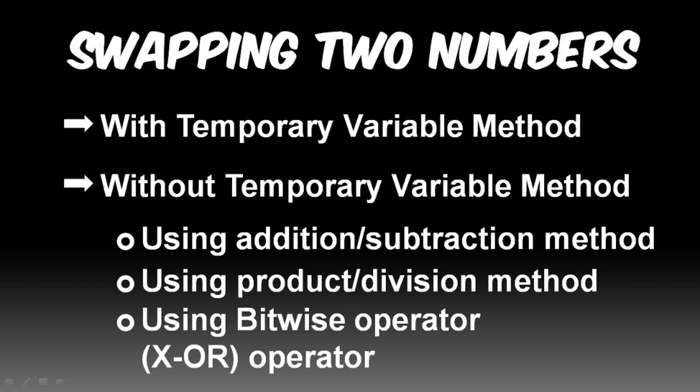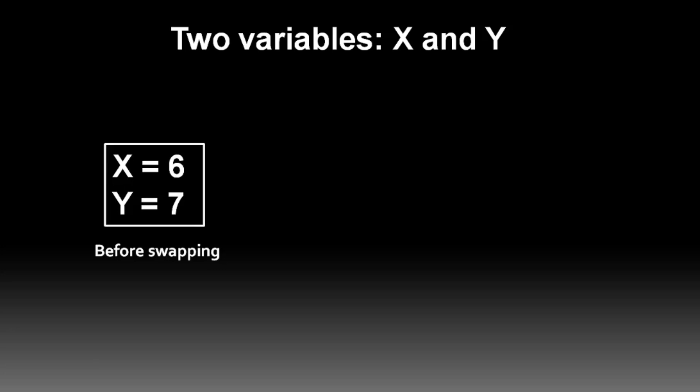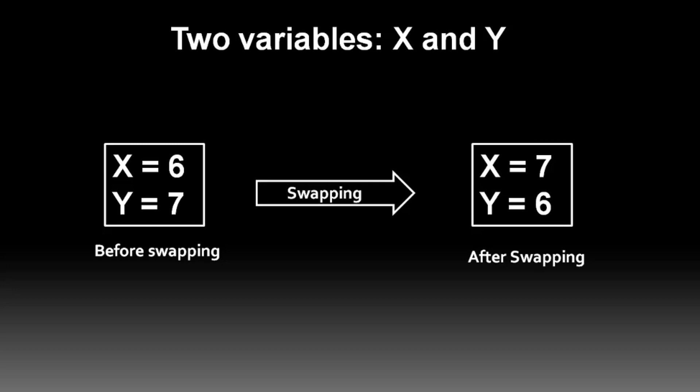Before talking about these methods, let us consider two variables X and Y whose initial values before swapping are 6 and 7 respectively. After swapping, the values will interchange — that is, X equals 7 and Y equals 6.